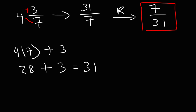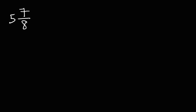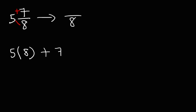That is the answer. Here's another one you could try: find the reciprocal of 5 and 7 over 8. Feel free to pause the video and try that example. Let's turn this into an improper fraction. Rewrite the 8, then multiply 5 times 8, and add 7 to it. 5 times 8 is 40, and 40 plus 7 is 47. So this is 47 over 8.